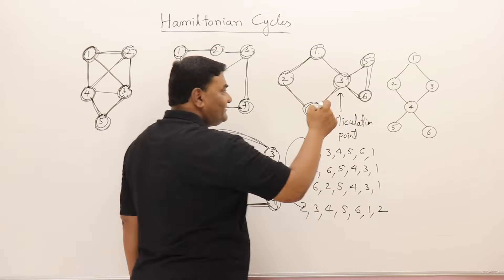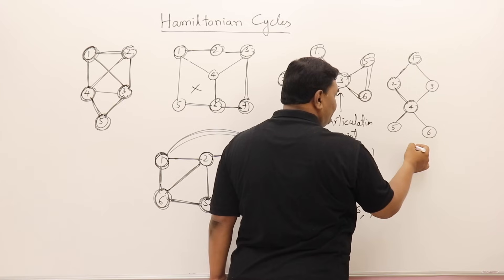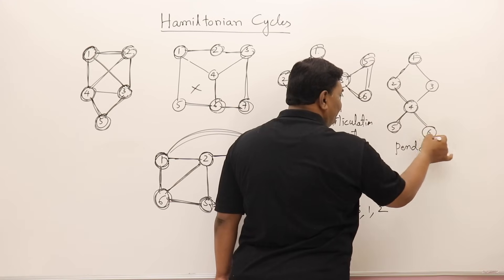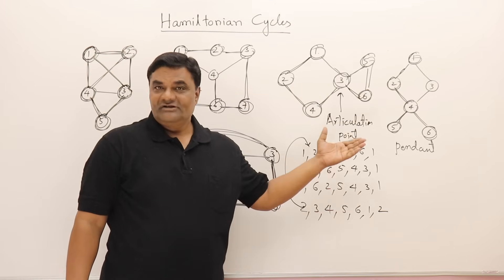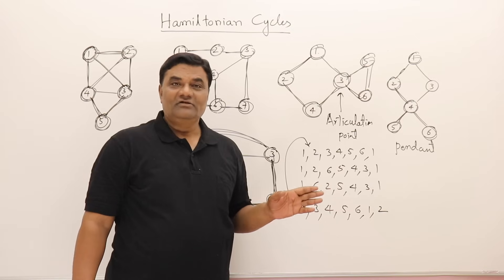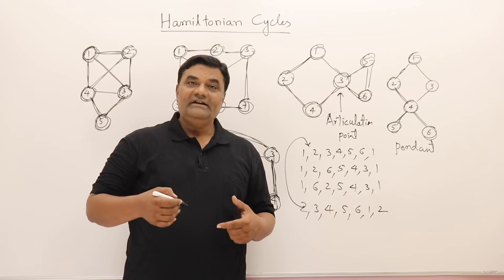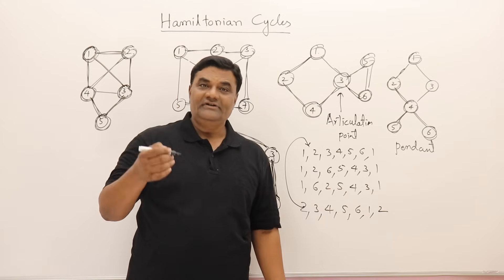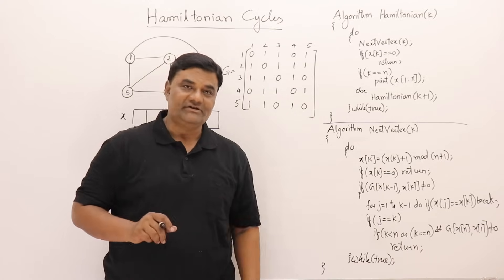In another example, trying 1→2→4→5, we cannot come back and also reach 3. Here there are pendant vertices — vertices of degree one. Because of pendant vertices, a Hamiltonian cycle is not possible. So we learn: if there is an articulation point, Hamiltonian cycle not possible; if there is a pendant vertex, Hamiltonian cycle also not possible. Now I will take an algorithm and example graph to show how backtracking helps solve this problem.